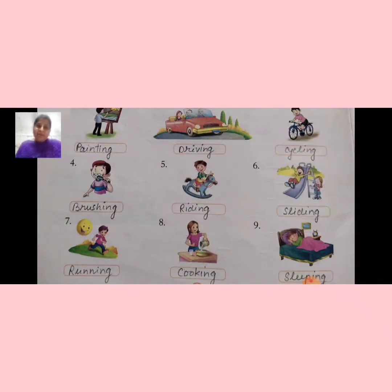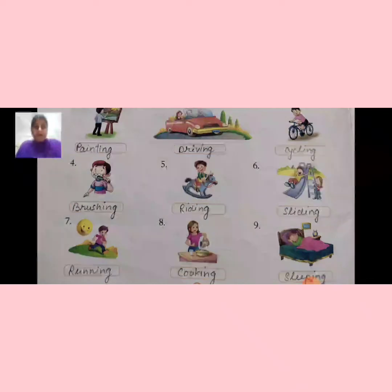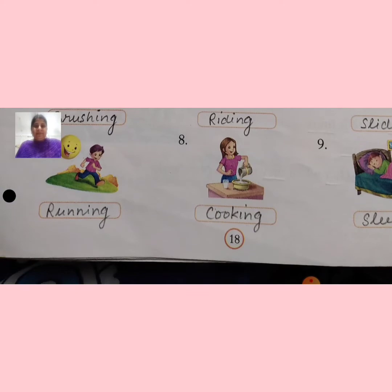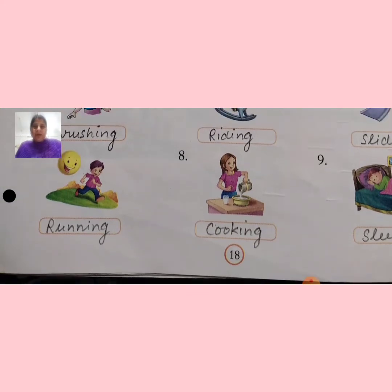Riding — ek chhota sa bacha, small child like you, sit on horse and horse riding, toh R-I-D-I-N-G, riding. Two students were playing on a slider — sliding, S-L-I-D-I-N-G, sliding. A boy who runs, it means R-U-N-N-I-N-G, running.